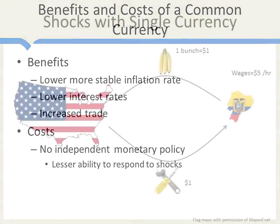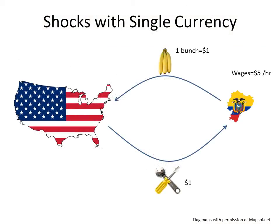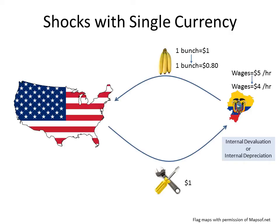Let's look at a shock when two countries use the same currency. Suppose Ecuador sells bananas to the United States and in return imports small tools. Suppose a bunch of bananas costs a dollar, and at that price, wages in Ecuador are $5 per hour. Now suppose another country starts producing bananas competing with Ecuador, or people in the United States decide they don't like bananas anymore. For whatever reason, imagine the world price of bananas falls from $1 a bunch to $0.80 a bunch. It's clear that wages in Ecuador can no longer be as high. With a 20% fall in the price of bananas, to keep everybody employed, wages have to fall by the same proportional amount to $4 per hour. This is called internal devaluation or internal depreciation.